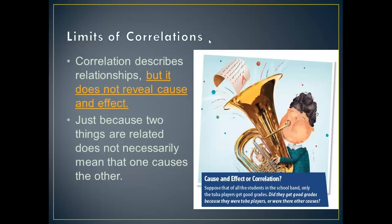Both variables could be related to some other third variable that is the actual cause. For the cigarette example, smoking and shorter life expectancy could be linked only because people who smoke may be less likely to eat right and exercise, whereas non-smokers may tend to eat healthier and exercise more. To sum it up, a correlation tells researchers if there is a relationship between variables, how strong that relationship is, and in what direction it goes. And that is the end of today.